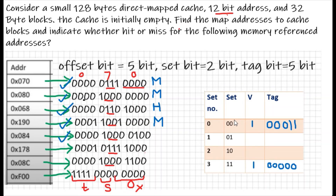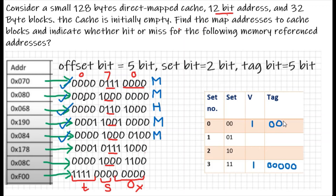Moving to the next address, the set is 00 again. Comparing: stored tag is 00011 but the address tag is 00001, so they don't match — it's another miss. We update the tag to 00001.